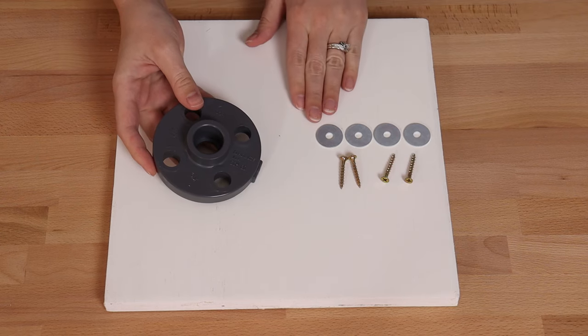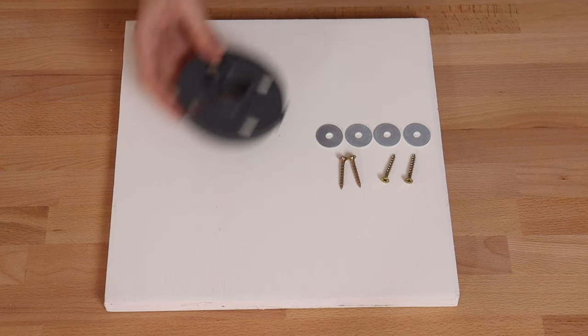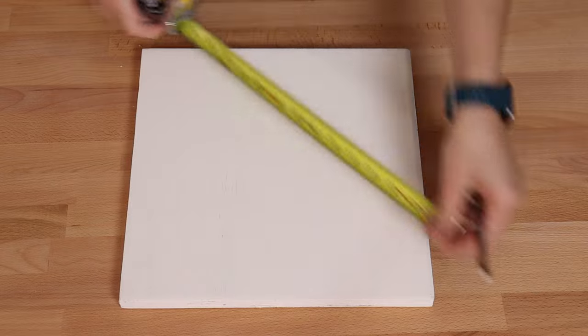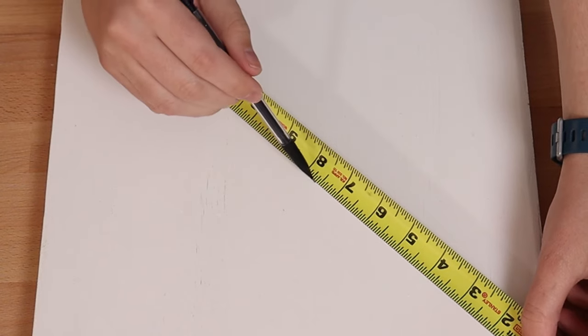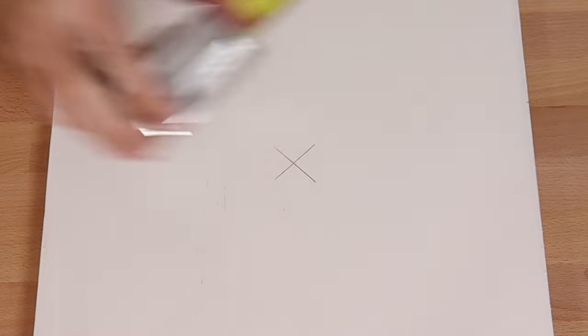In addition to the flange, you'll need four fender washers and four inch and a quarter long screws. And we're going to center all of this in the middle of our board. So to find that center point, I'm going to take a tape measure or ruler and just line it up with the corners of the board and make an X right in the center.